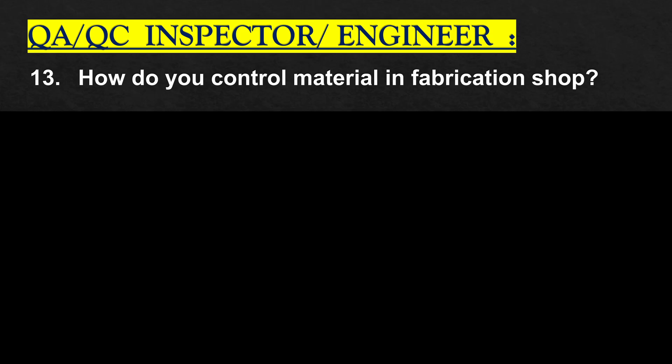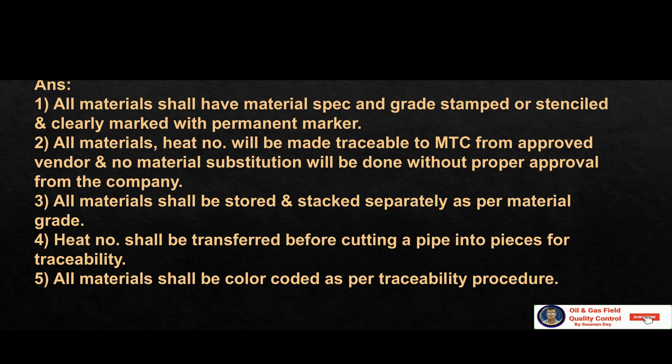How do you control material in a fabrication shop? All material shall have material specification and grade stamped, stenciled and clearly marked with permanent marker. All material heat numbers will be made traceable to MTC — material test certificate — for approved vendors, and no material substitution will be done without proper approval from the company. All material shall be stored and stacked separately as per material grade. Heat numbers shall be transferred before cutting a pipe into pieces. All materials shall be color coded as per the traceability procedure.